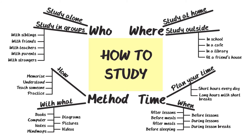What are some of the ways you can study? When coming up with categories, you can use questions like who, what, when, where, why, and how. Your mind will then form ideas that relate to these questions, like who do I study with, or when can I study?